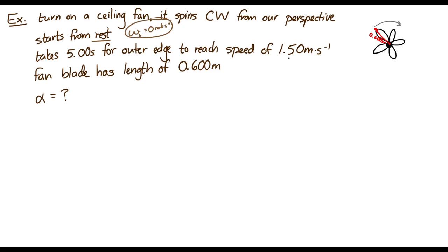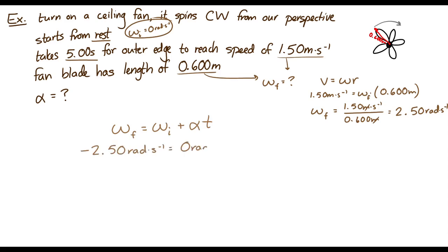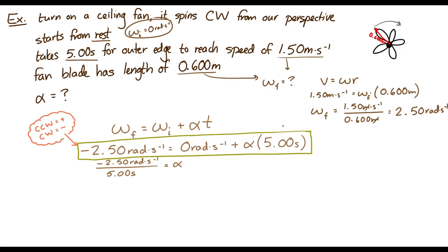We were told that the initial angular speed is zero. We can figure out the final angular speed. Because in the end, the outer edge of the fan blade moves at 1.5 meters per second. And it has a radius of 0.6. So the final angular speed is 1.5 meters per second divided by 0.6 meters, which is 2.5 radians per second. And then we can use this rotational version of a kinematic equation to solve for the angular acceleration. And I will use the sign convention that counterclockwise is positive. And here we're rotating clockwise. So I'm going to have some negative signs in here. I get negative 2.5 radians per second is equal to 0 radians per second, plus the angular acceleration times 5 seconds. And if I solve for the angular acceleration, it's equal to negative 0.5 radians per second squared. And that negative sign is telling me that the angular acceleration is in the clockwise direction.